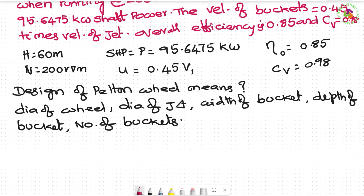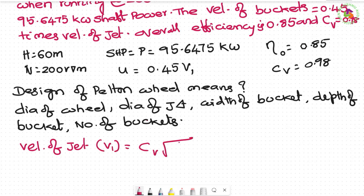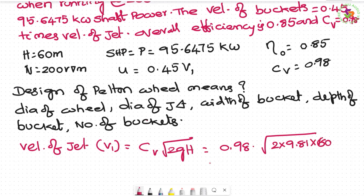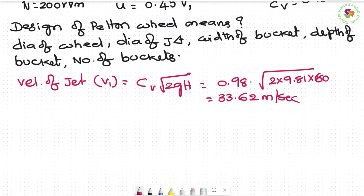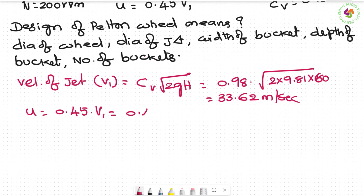First, velocity of jet: v1 = Cv × √(2gH) = 0.98 × √(2 × 9.81 × 60) = 33.62 m/s. Then bucket velocity: u = 0.45 × v1 = 0.45 × 33.62 = 15.13 m/s. So u1 = u2 = 15.13 m/s.